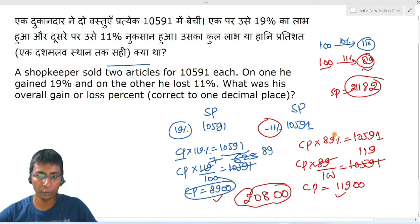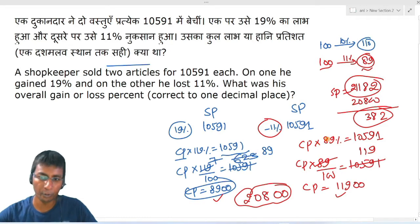Are you getting profit or loss? Of course profit. How much profit? The difference between these two. What's the difference? Simply subtract 20800. This is 2, this is 8, this becomes 3. You get the profit of 382.